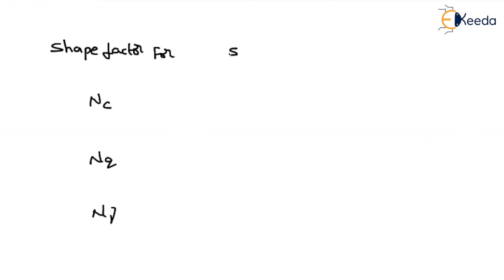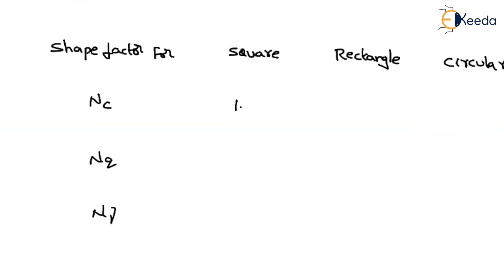If it is a square footing, the shape factor for Nc is 1.3, for Nq you multiply by 1, and for Nγ you multiply by 0.8.